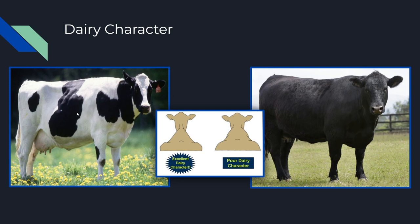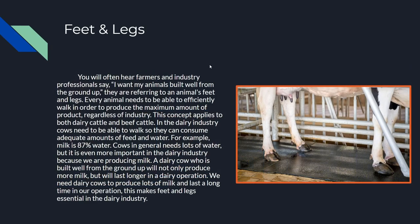When we talk about the ribs, they're located here where my mouse is currently. These ribs — we want a large body cavity, and we'll get more into that when we talk about body capacity. We want those ribs to be nice and springy and round like a barrel. That's a little bit about dairy character and some of the anatomical parts you need to know in order to identify good versus bad dairy character.